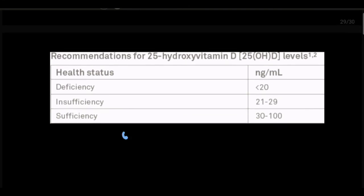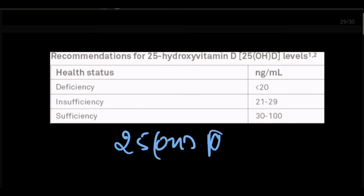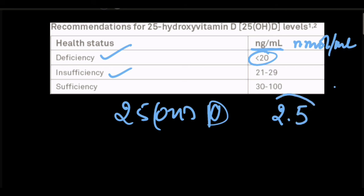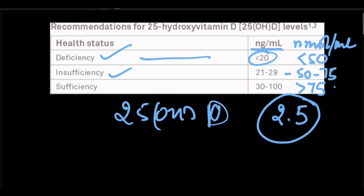When testing for Vitamin D, we always test for 25-hydroxy Vitamin D. Normal levels are reported in nanograms per mL: above 30 ng/mL is normal, 21–29 ng/mL is insufficiency, and less than 20 ng/mL is deficient. Some labs use nanomoles per mL — you can convert by multiplying the nanogram value by 2.5. So normal is above 75 nmol/mL, insufficient is 50–75 nmol/mL, and deficient is less than 50 nmol/mL.